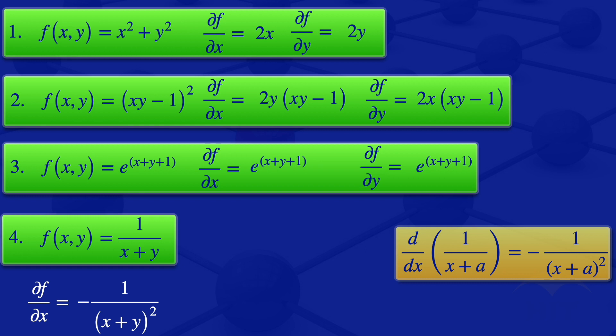For the partial derivative of f with respect to y, we treat x as if it's a constant and use a similar formula, now differentiating with respect to y. Treating x as a constant gives us −1/(x + y)². So those are the partial derivatives of the fourth function.